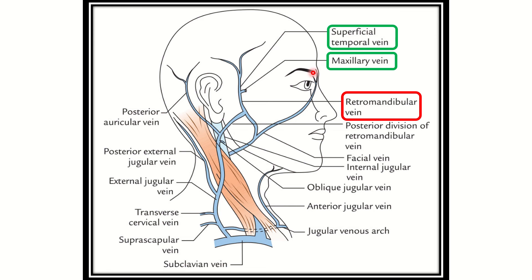To know about the retromandibular vein, the venous drainage of the head and neck face area is relevant here. Here we can see the retromandibular vein is divided into two parts — one part is joined with the facial vein and another part is joined with the posterior auricular vein. The retromandibular vein receives two important tributaries: one is the superficial temporal vein and the other is the maxillary vein.